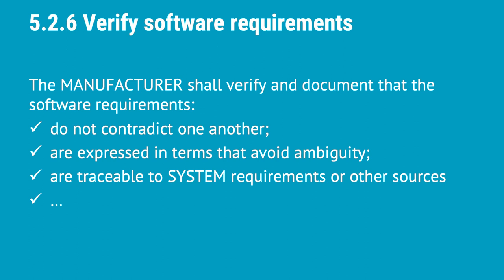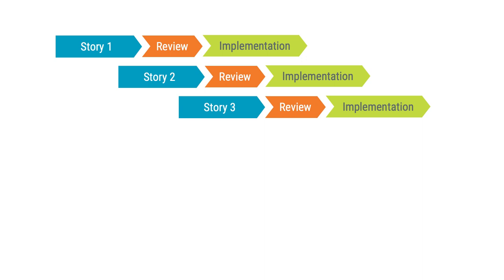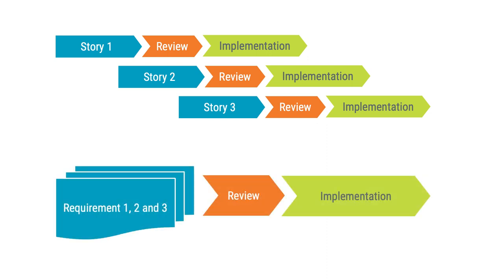Working with backlog grooming and sprint planning can be compared with eating an elephant — take one bite at a time. For example, you need to verify the quality of your requirements by verifying that they do not contradict one another, are expressed in terms that avoid ambiguity, and are traceable to system requirements or other sources. If you review a Scrum story before it gets implemented, you do it by taking one bite at a time. You verify software requirements on a story-based level instead of verifying your complete backlog of requirements. In the waterfall approach, you typically aim to have nearly a full set of requirements and then go for a review — you will not verify as frequently, but you will spend more time in every review. So you can work with Agile Principles and meet the standard requirements; it is only a question of how you have chosen to meet the requirements.